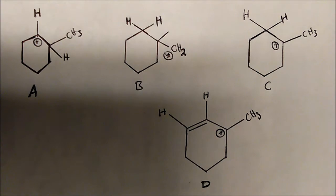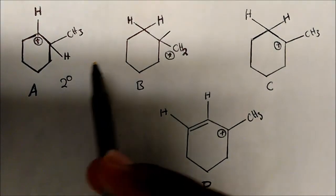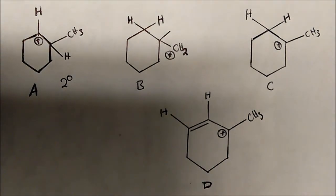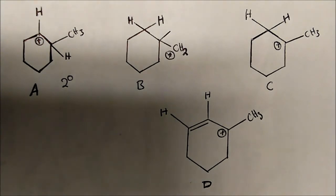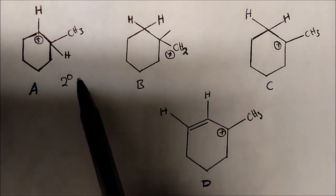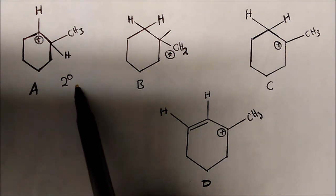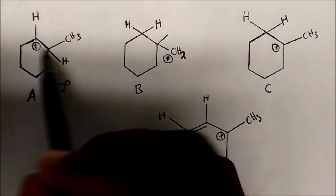So how would we label this carbocation — is it primary, secondary, or tertiary? In this case it's a secondary carbocation, denoted by 2°. It's secondary because the carbon with the plus charge has one hydrogen attached to it. Train your brain to think of carbocations in terms of how many hydrogens they have — zero, one, or two — because when we start talking about substitution or elimination reactions, that will give you a better cue about spacing and whether it's going to be SN1, E2, and so on.